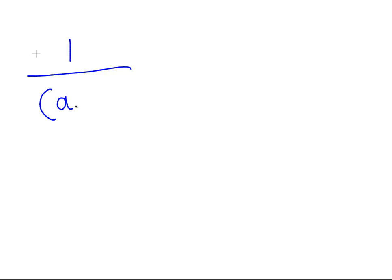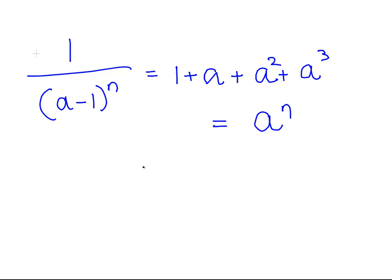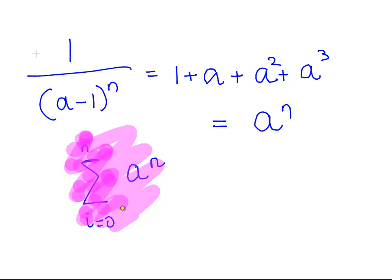The last one for this presentation — and I am just doing a quick run through because I am going to use these in future presentations and I do not want to be taking them out of nowhere — is 1 over 1 minus a, which gives us a plus a cubed and so on. The general term for this is simply a to the power of n, so it is the sum of a to the power of n from i equals 0 to n. So those are a couple of important Taylor series to remember. This was meant as a short video just to talk about where I am coming up with these.